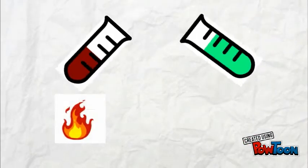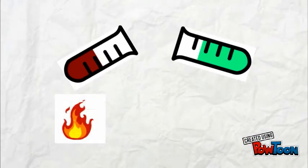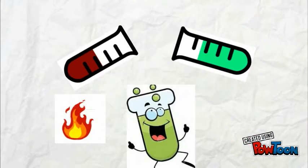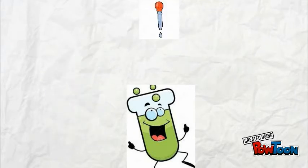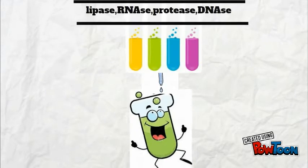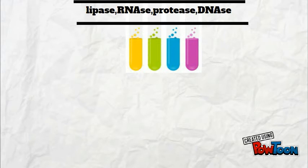Heat-killed S strain bacteria was mixed with living R strain bacteria, and then added with a digestive enzyme to digest each element respectively, and then injected into the mice.